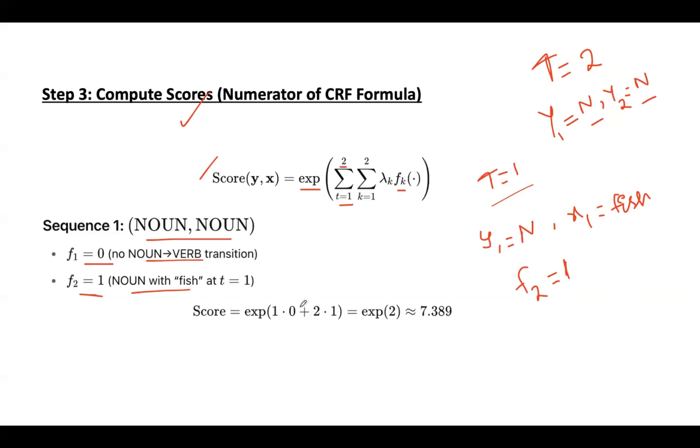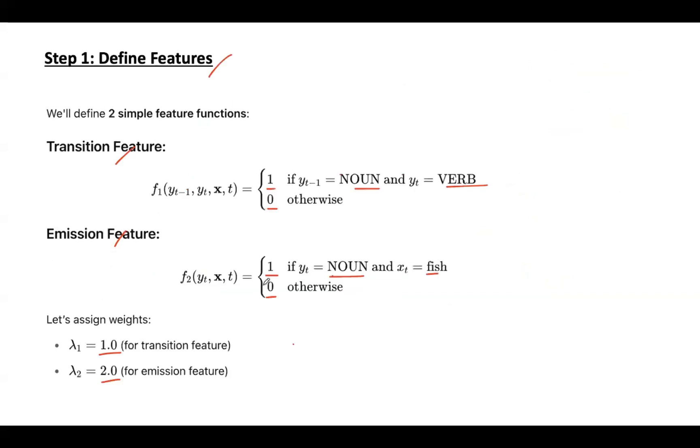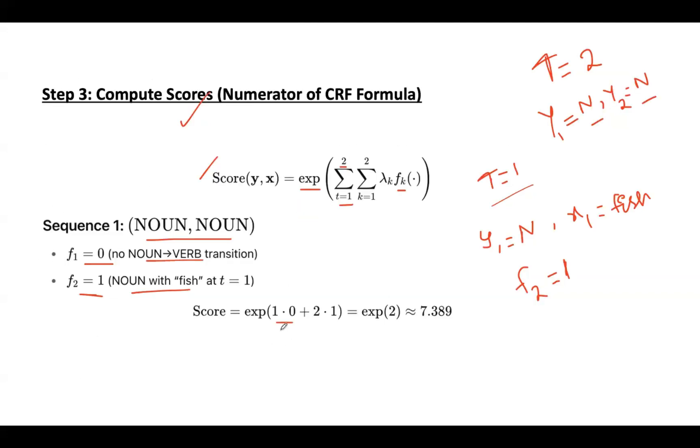From this, we are calculating the score exponentiated. So, exponent of 1 into 0. What is 1 here? This is for f1, weight associated with f1 is 1. The value assigned to this f1 is 0, so 1 into 0.